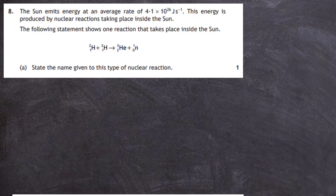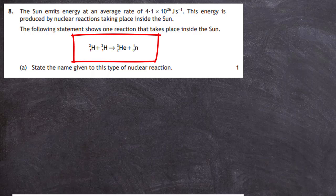Question 8 from section 2 of the 2019 Higher Physics SQA exam. The sun emits energy at an average rate of 4.1 x 10 to the power of 26 joules per second. This energy is produced by nuclear reactions taking place inside the sun. The following statement shows one reaction that takes place inside the sun. For one mark we're asked to state the name given to this type of nuclear reaction.